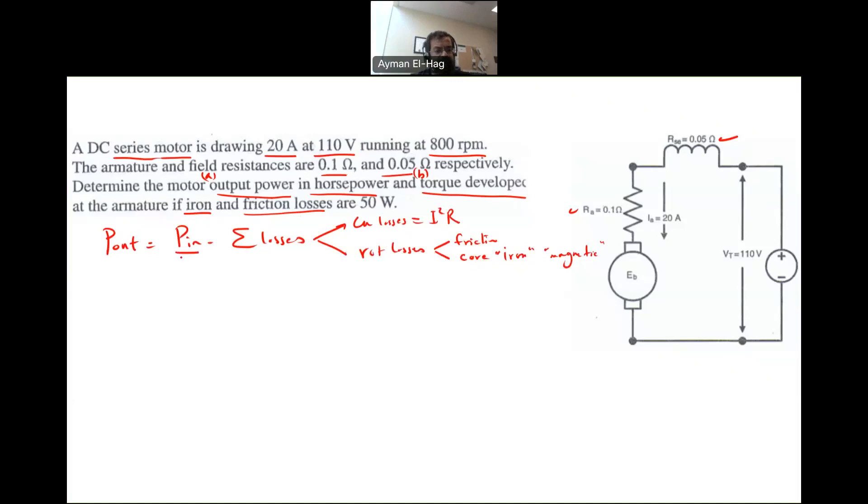So first you need to find P in. What is the input power for this motor? Very straightforward. It is V terminal times IA, which is 110 volt times 20 amps, and this will give us 2,200 watt. This is your input power.